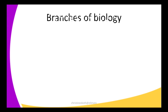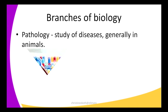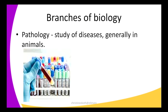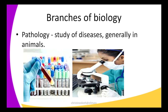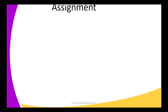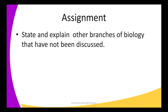The next branch of biology is pathology — the study of diseases in animals specifically. Experts in this field look at diseases, what causes them, and what measures can be used to eliminate such diseases. They develop things like vaccines and such. This is what we study under the branch of biology called pathology.